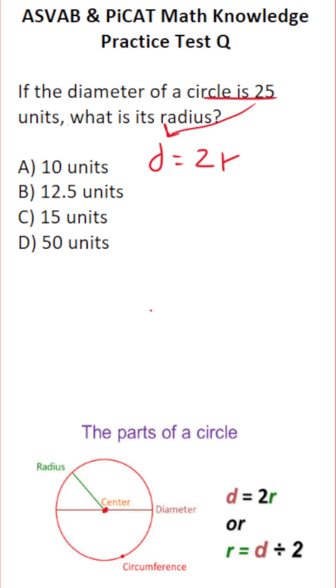In this case, we were told our diameter is 25, and we want to solve for its radius, so we're going to divide both sides of this equation by 2.